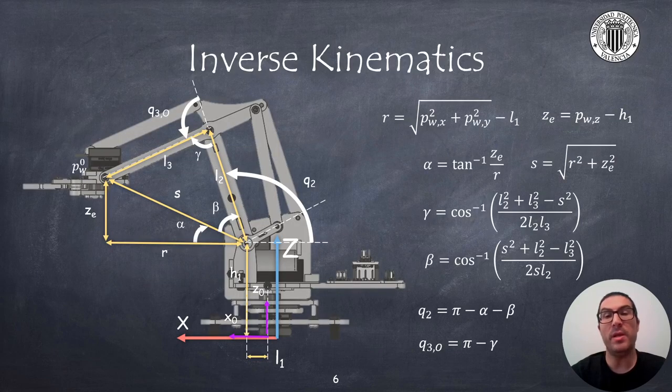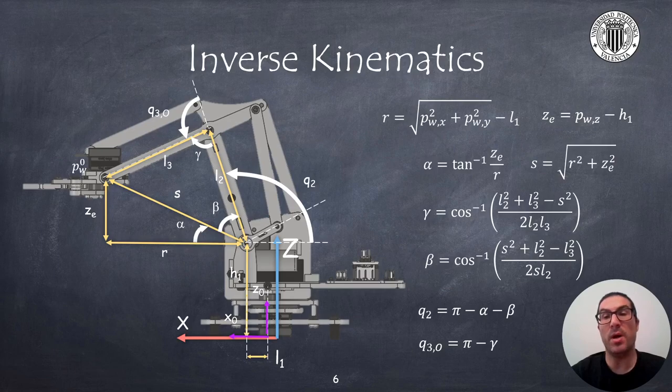Then the coordinates q2 and q3o are computed from basic trigonometric relationships based on the well-known coplanar problem. First we need to compute the distance r from the gripper coordinates. Later we compute the height ze. With these two values then we can compute the values for alpha and s since they form a right angle triangle.